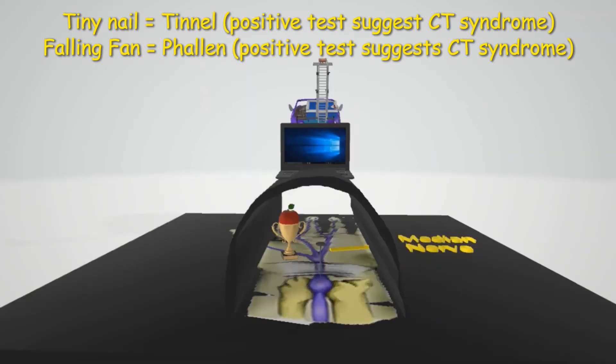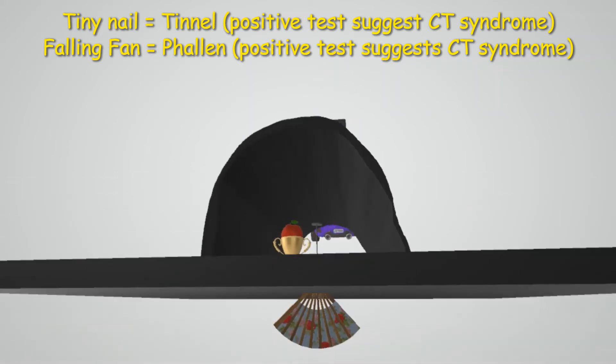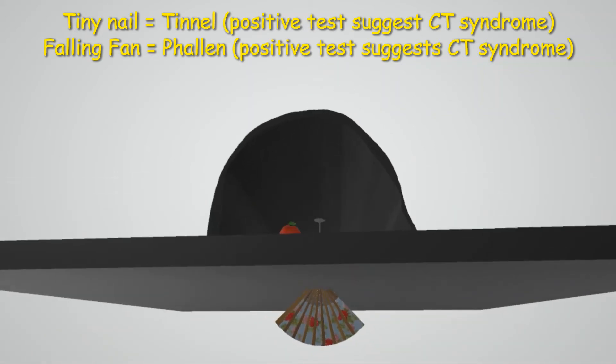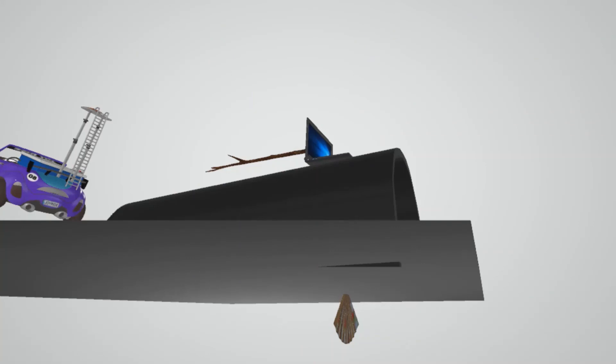Over here we see this fan that's falling down—the fan falling for Phalen, the Phalen maneuver. This also suggests carpal tunnel syndrome, in which 90-degree flexion of the wrist causes tingling. The fact that this fan is at 90 degrees to the tunnel helps us remember that the Phalen maneuver is when there's 90-degree flexion of the wrist, and this causes tingling.